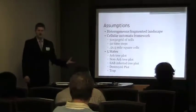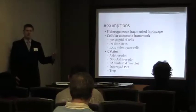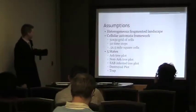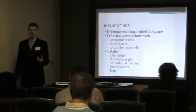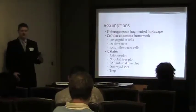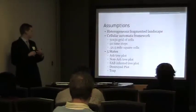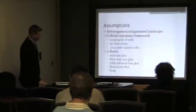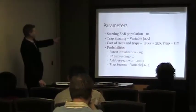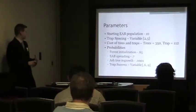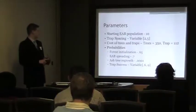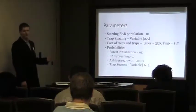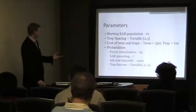I have a set of assumptions I work with. I used a heterogeneous fragmented landscape — cells that had ash trees or non-ash trees — which determines whether the insect can infect them. I used a 50 by 50 grid of cells with 50 time steps, each cell representing a square half-mile of land. The model has five states: ash trees, non-ash trees, trees destroyed by the insect, cells occupied by the insect, and trap cells. Parameters include starting population, trap spacing, cost of trees and traps, initial forest density probabilities, insect spread likelihood, and tree regrowth probability.